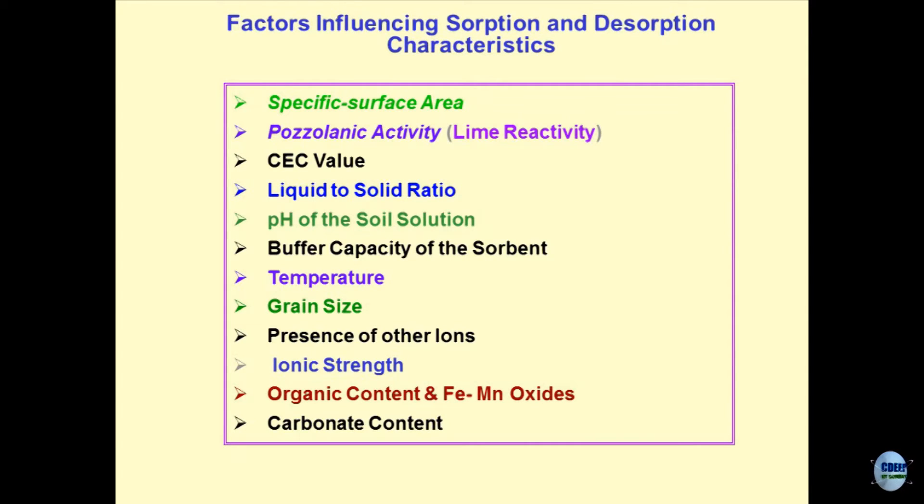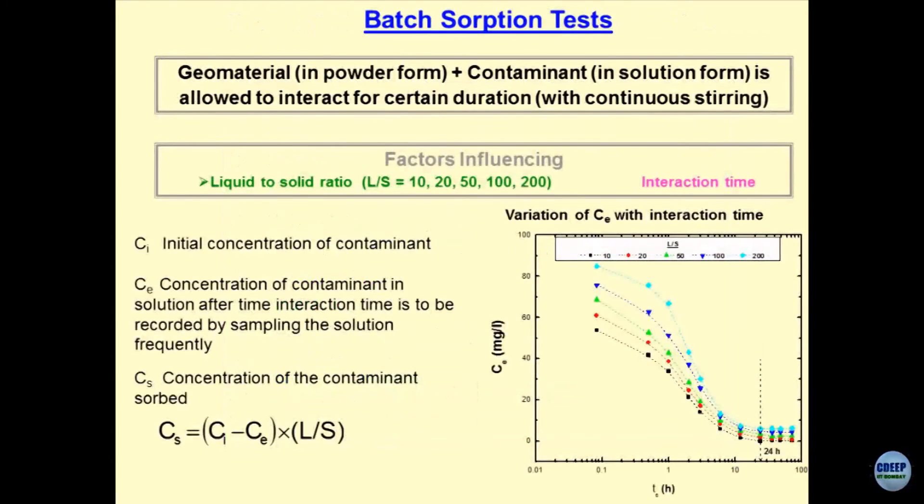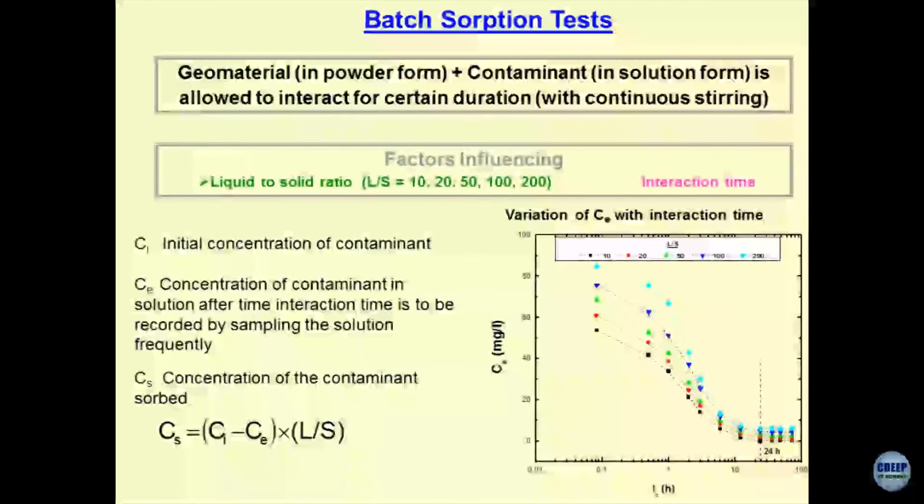I have just given you some parameters which would be influencing the Kd parameter directly. Just to remind you why Kd parameter is required? Because you wanted to solve one dimensional ADE. Unless you get Kd parameter, you cannot get Ct as a function of x, y, z and T. The best tests are you take certain amount of soil or the geomaterial in the powder form, put it in the solution, stir it over a period of time, heat it also if you want and then create different liquid solid ratios and then keep on dosing or sampling out from the solution and see what concentration of chemicals is getting sorbed on to the solid phase. These tests are extremely intensive to conduct, each point you might be getting after few days.